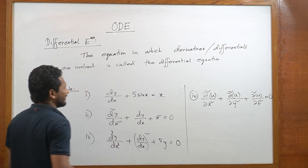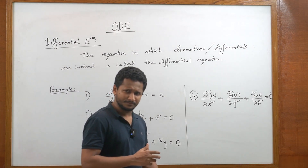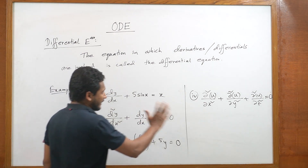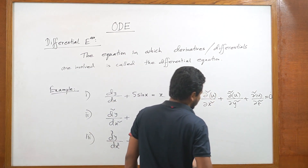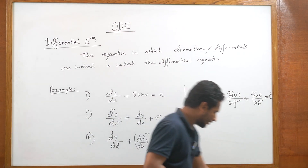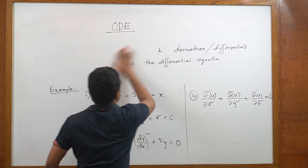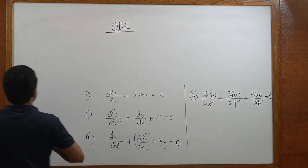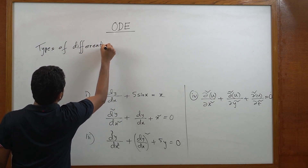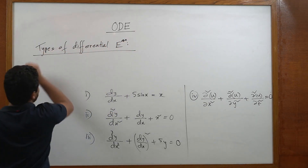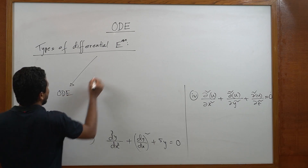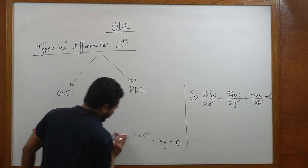We can see that differential equations are of two types. The first type is ordinary differential equation, where no partial derivative is involved. The other type is partial differential equation. So there are two types: ODE and PDE.